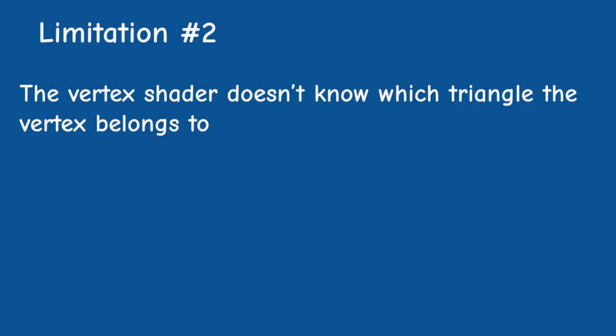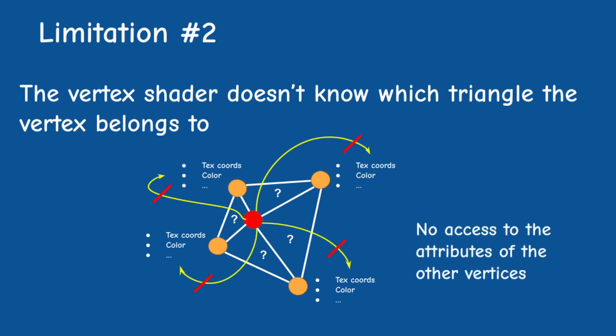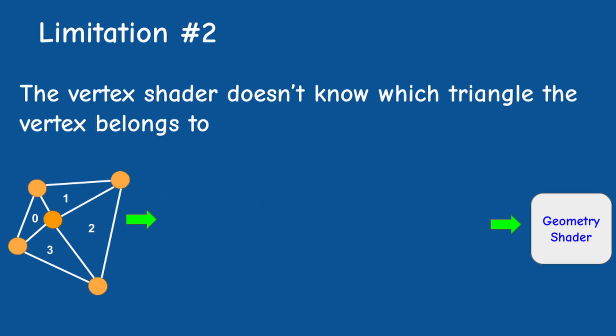Second, the vertex shader doesn't know which triangle the current vertex belongs to. A vertex may be shared between several triangles, which makes it even more difficult to know the context using the existing tools. The vertex shader cannot access the information in the other two vertices of the triangle. The geometry shader solves this problem by providing the shader code with access to the attributes of all the vertices in the primitive. This basically means that the GS is executed once per primitive, and so the context that it sees is the entire primitive rather than a single vertex like the vertex shader.